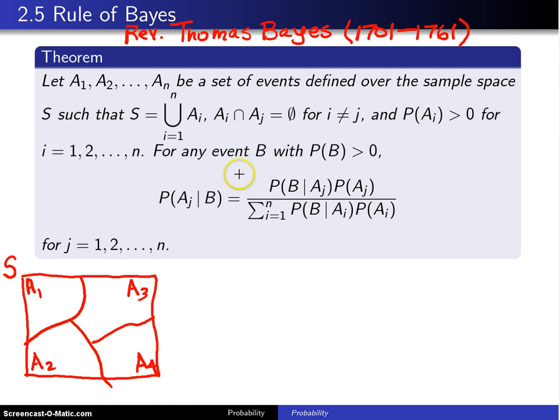Then for any event B, and again you can draw the event B anywhere you'd like. I'll go ahead and draw it down here, but it is arbitrary where you can draw it. With probability B greater than 0, then the probability of Aj given B is equal to the probability of B given Aj times the probability of Aj divided by the sum from i equals 1 to n of the probability of B given A sub i times the probability of A sub i, for j running from 1 up to n. Now the proof of this result is actually much less intimidating than the result itself.